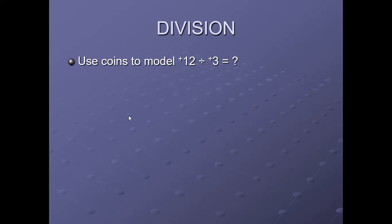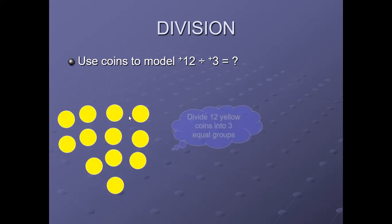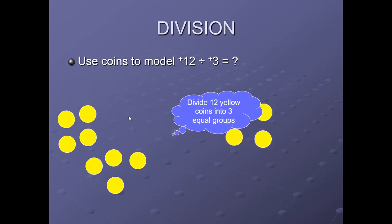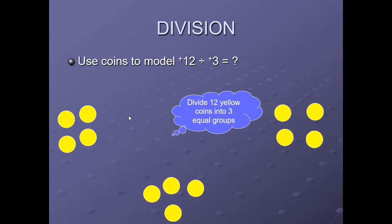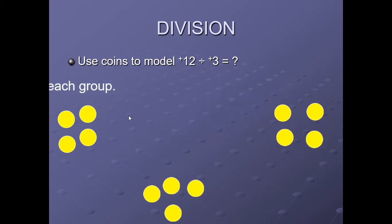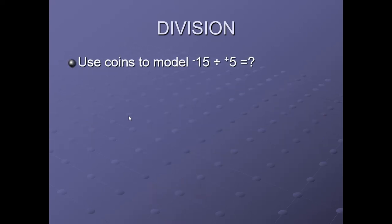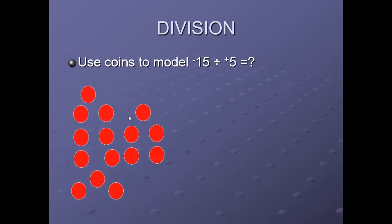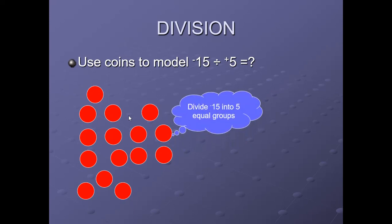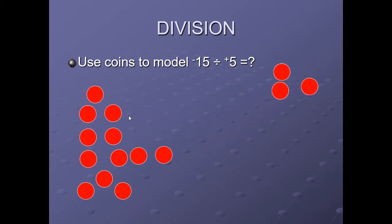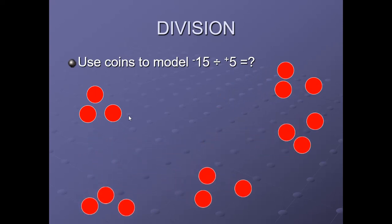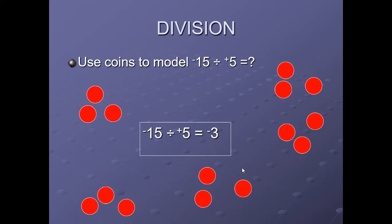Now let us come to division of integers. Use coins to model 12 ÷ 3. We have taken 12 coins and divide them into 3 equal groups. Each group contains 4 coins. Hence 12 ÷ 3 = 4. Now use coins to model minus 15 ÷ 5. Consider 15 negative coins (red coins) and divide into 5 equal groups. Each group contains equal coins. Hence minus 15 ÷ 5 = minus 3.